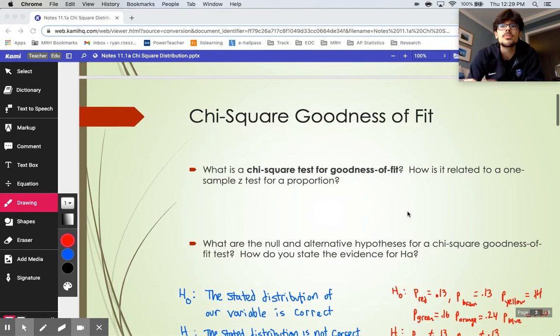So the official name for the test we were working on in that M&M problem is called the chi-square goodness of fit test. Goodness of fit always throws me for a little bit of a loop. It doesn't sound to me grammatically correct, but it's totally what it's called. Sometimes you'll see goodness of fit abbreviated appropriately GOF, G-O-F.